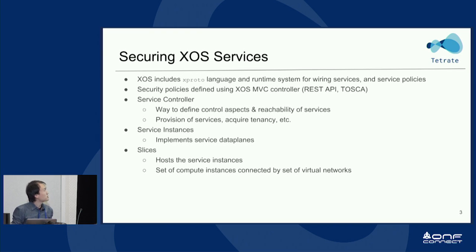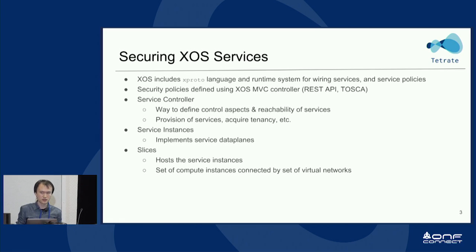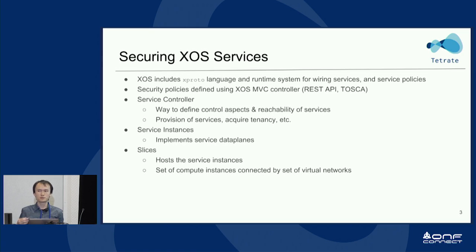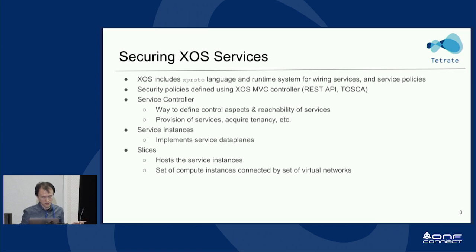Security policy is defined using XOS models used by REST APIs. Service controllers, service instances — everything needs strong identity to provide security. In the Istio model, identity is provided by X509 certificates with strong private keys. The service controller, service instances, and service status all need these identities.